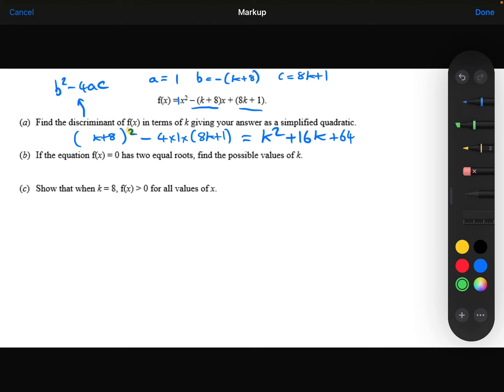Then we have minus 4 times 1, which is just minus 4. Minus 4 times the 8k is minus 32k. Minus 4 times 1 is minus 4.